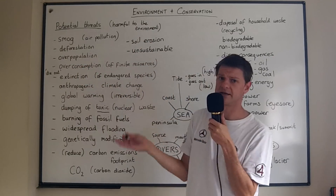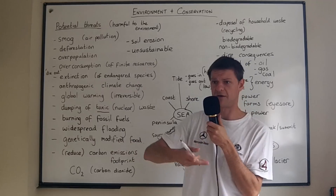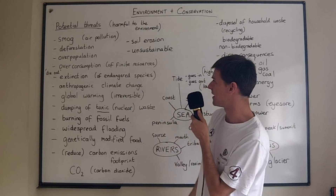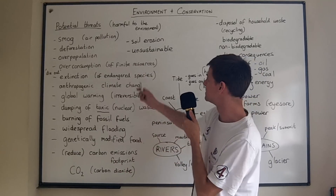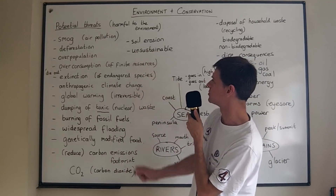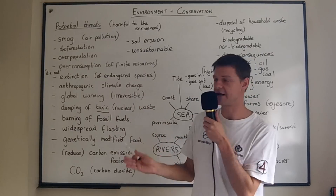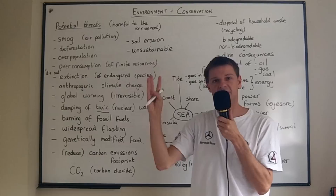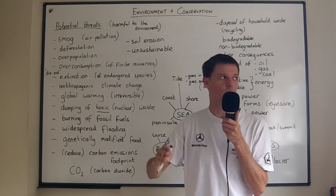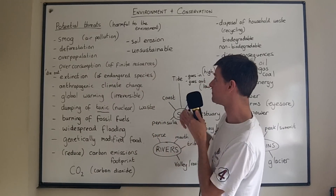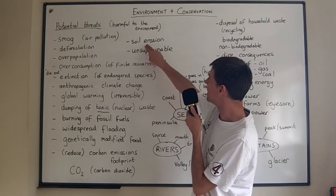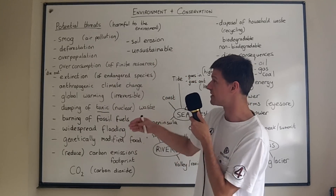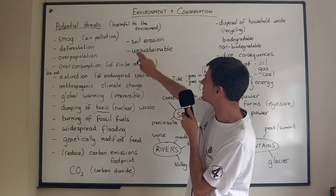Deforestation is simply the cutting down of trees at an industrial scale so that there's not much forest left. One of the results of this is soil erosion — a lot of the soil gets eroded by rain and precipitation afterwards. Erosion means this weathering by water or rain. It could be by the sea — we talk about beach erosion, and also the erosion of the banks of a river as water flows down.